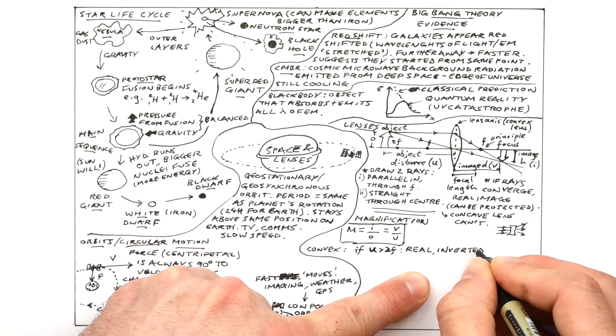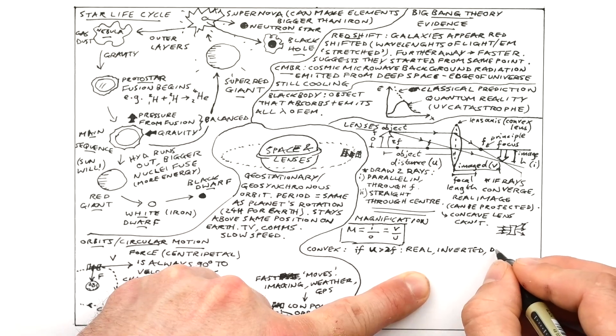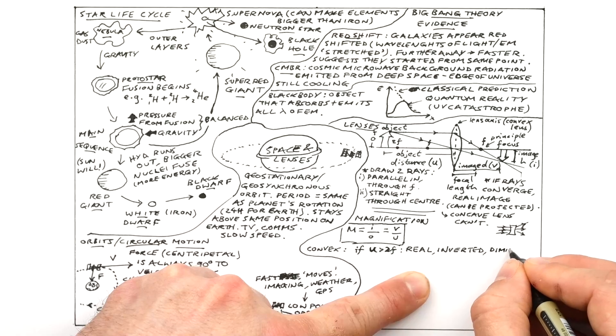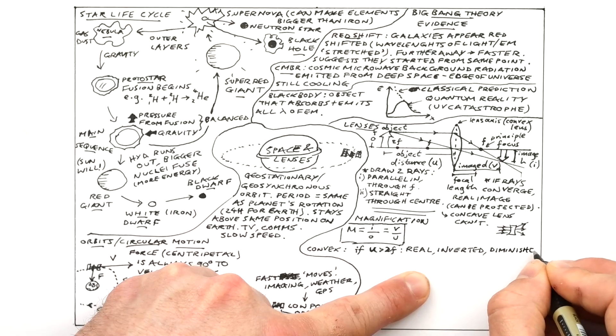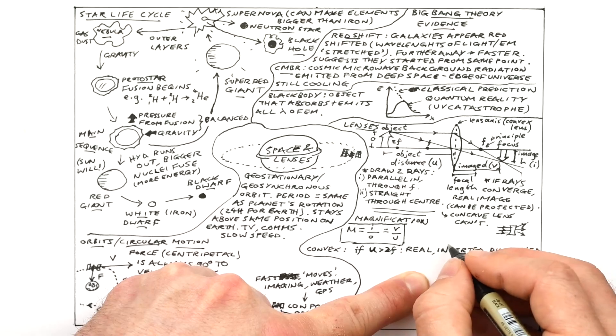Okay convex lens. The most common lens. If the object is further than 2F away from the lens like the example above then the image produced is real. It's also inverted because it's the other way up. And it's also diminished. That means it's smaller than the object.